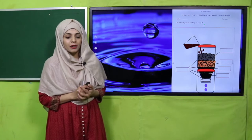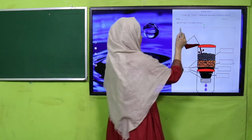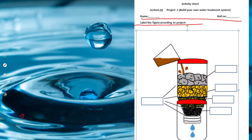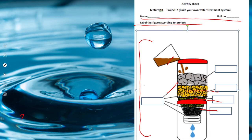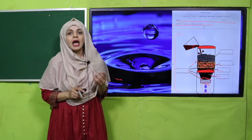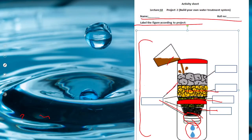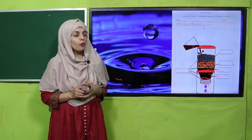Write your name and roll number and label the figure according to the project. We have made this project, so you need to label it as well. This is a plastic bottle — then comes sand, then small gravel, then large gravel, this is the dirty water going in, and the clean water comes out at the bottom covered with a clean cloth. Pause the video and complete the labeling.